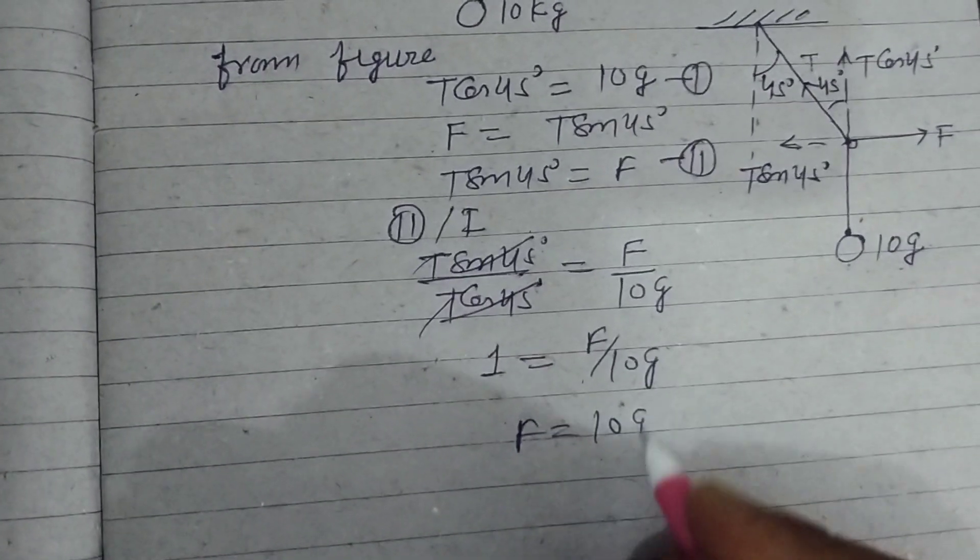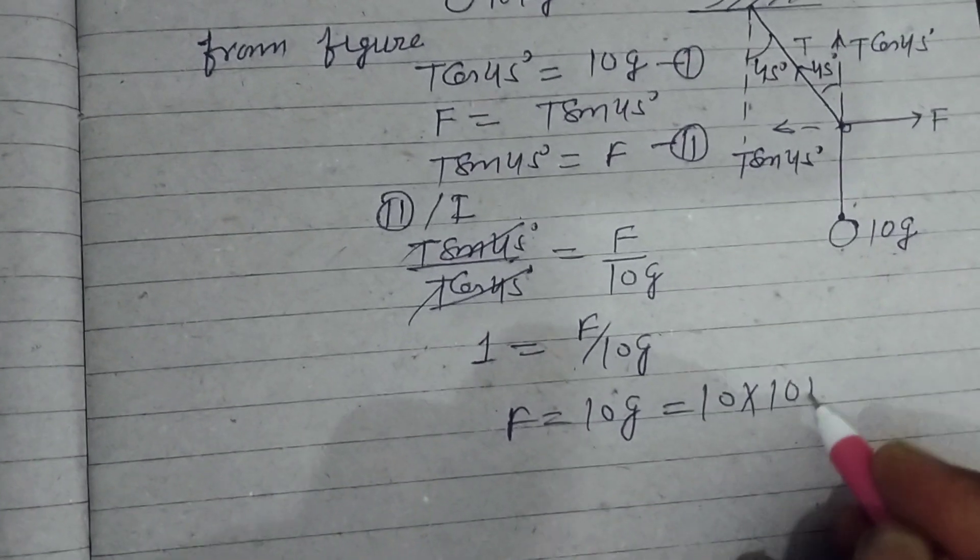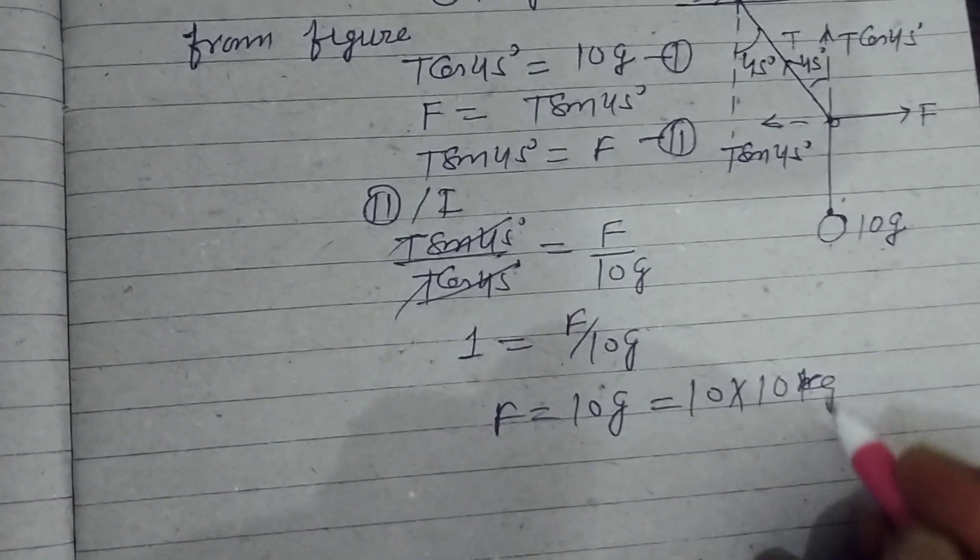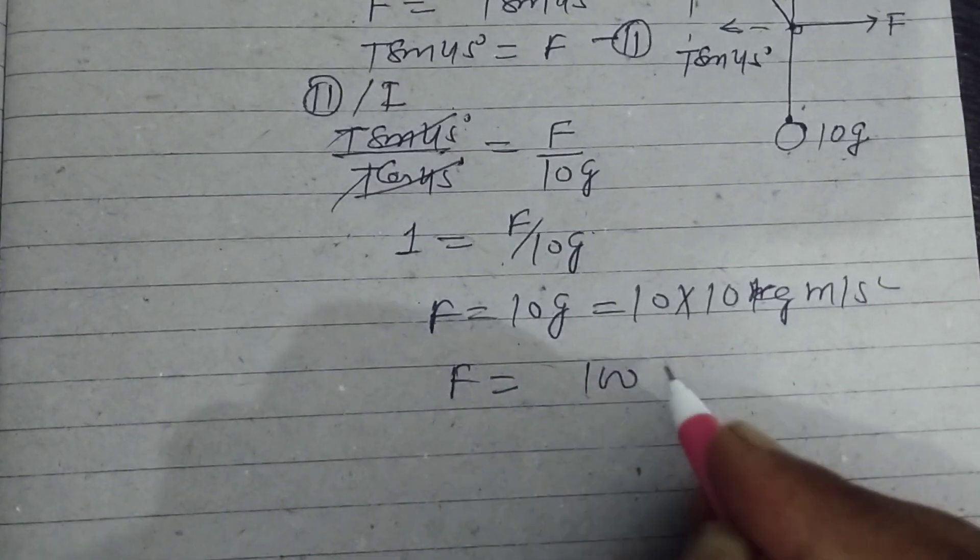Therefore F equals 10G, and G is 10 meters per second squared. So this is kilogram meter per second squared. Therefore F equals 10 into 10, 100 Newton.